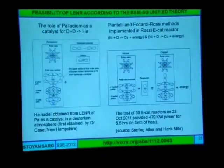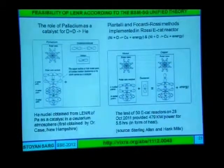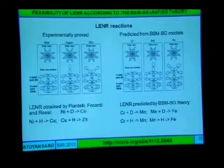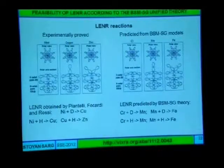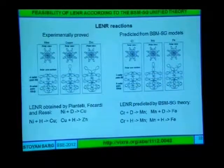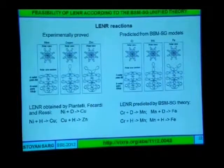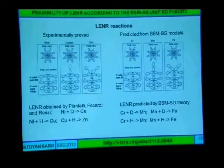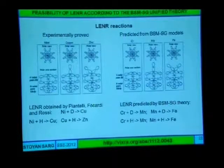This is the explanation of the Piantelli and Focardi-Rossi method. Here is another experiment explanation — the beauty of this is just from the structure of the nuclei; you could conceive another possibility. Here is the experimentally proved case with nickel going to copper or zinc. You see the similarity of nickel with chrome. So I make the prediction that chrome could also be involved in the so-called fusion reaction. The difference is that if we have two radial pairs, we have four radial pairs. My prediction is that these reactions are possible according to this direction.